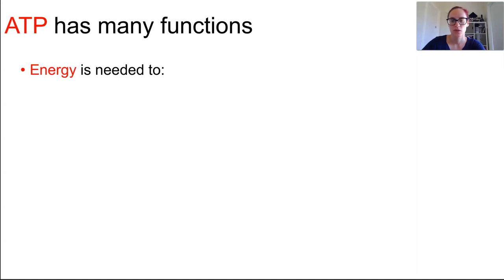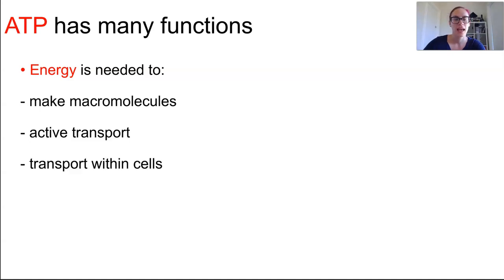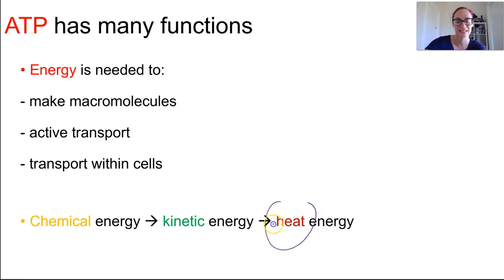Cells need a continuous supply of this energy being created from the ATP. ATP serves so many functions. It is needed to make macromolecules, to transport things across membranes, as well as transporting things within cells. So energy is used and lost to the environment as heat. It can't be reused once it's been done.